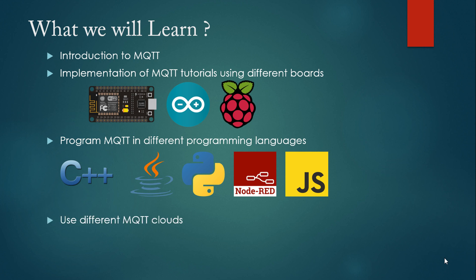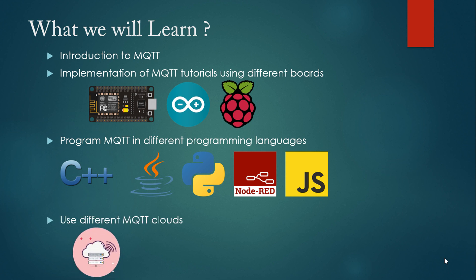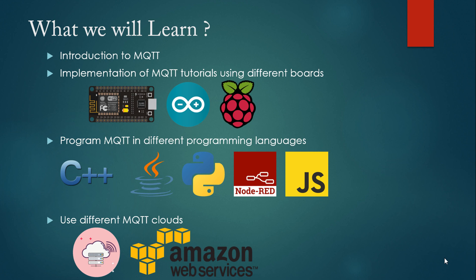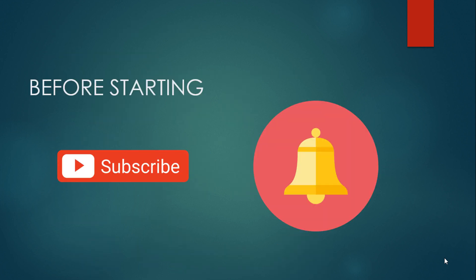We will also learn to use cloud MQTT, AWS, PubNub, and other available MQTT clouds. In these tutorials I will also mention how to set up an MQTT broker locally using Raspberry Pi. If you haven't subscribed, subscribe and press the bell icon to get notifications. Let's get started with the introduction of MQTT protocol.